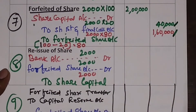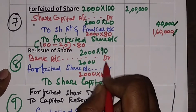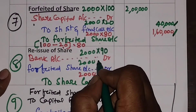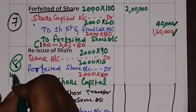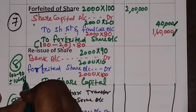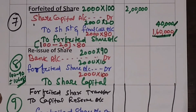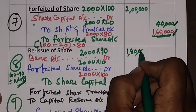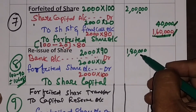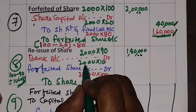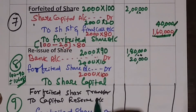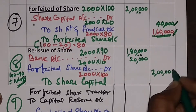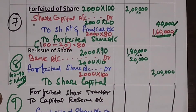Now for the reissue entry: these shares have been cancelled and reissued. 2,000 shares have been sold at Rs. 90 each. The cost of one share is Rs. 100, but it has been sold for Rs. 90 — a shortage of Rs. 10, which is a loss. That loss will be adjusted from the forfeited share account of Rs. 1,60,000. 2,000 into 90 = Rs. 1,80,000. So Rs. 2,00,000 worth of shares sold for Rs. 1,80,000 gives a shortage of 2,000 into 10 = Rs. 20,000.